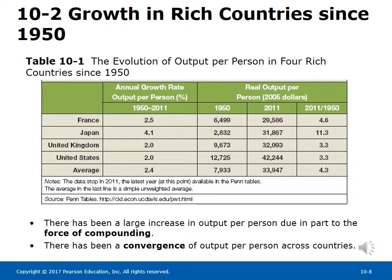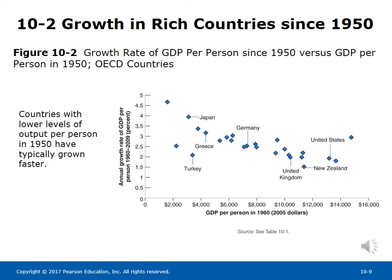In the U.S., output per person increased 3.3 times its level in 1950. There has been a convergence of output per person across countries — countries that were behind have grown faster, such as Japan, thus reducing the gap between them and the U.S. Figure 10-2 shows the growth rate of GDP per person since 1950 versus GDP per person in 1950 for OECD countries, confirming that countries with lower levels of output per person in 1950, such as Japan, Greece, and Germany, have typically grown faster.